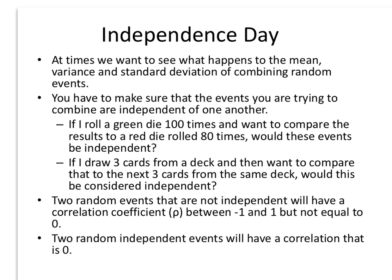Here's an example: a roll of a green die 100 times compared to a red die rolled 80 times. Would these events be independent? Flipping coins, rolling dice, or predicting where a ball lands on a roulette machine — they are independent events because the ball, the coin, the die does not remember what happened in the event before. So the probabilities do not change each time I roll the dice or flip a coin. Those are always considered independent events.